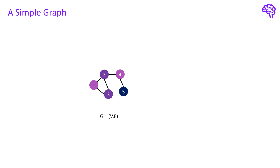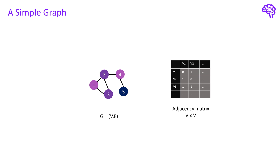Before we talk about graph neural networks, or GNNs for short, we should first have a look at graphs. A graph simply consists of nodes or vertices and connections between these nodes which are called edges. The information about these connections in a graph can be represented in an adjacency matrix. The elements of the matrix indicate connected nodes with a 1 and disconnected nodes with a 0. Besides adjacency matrices there exist also other ways to represent connections such as adjacency lists, but for now we will continue using the matrix representation.